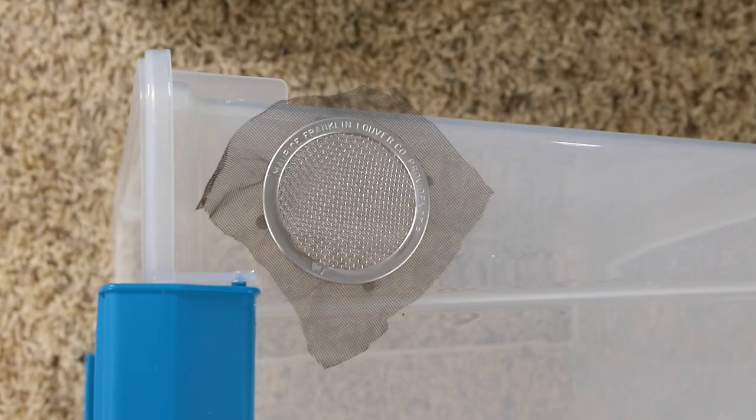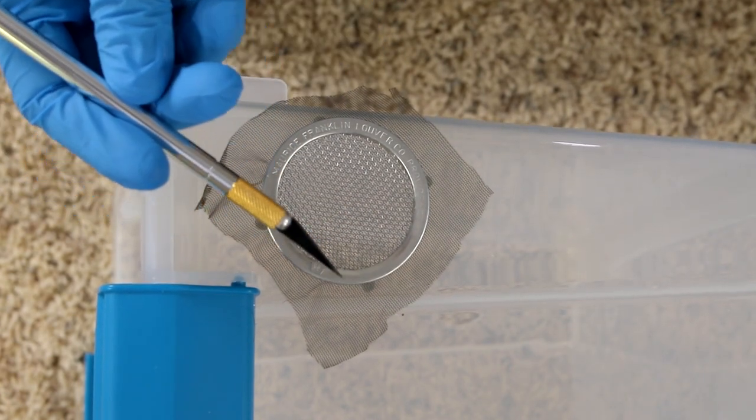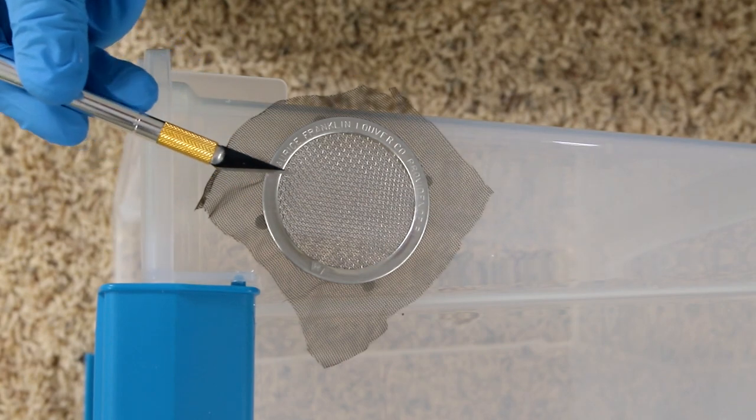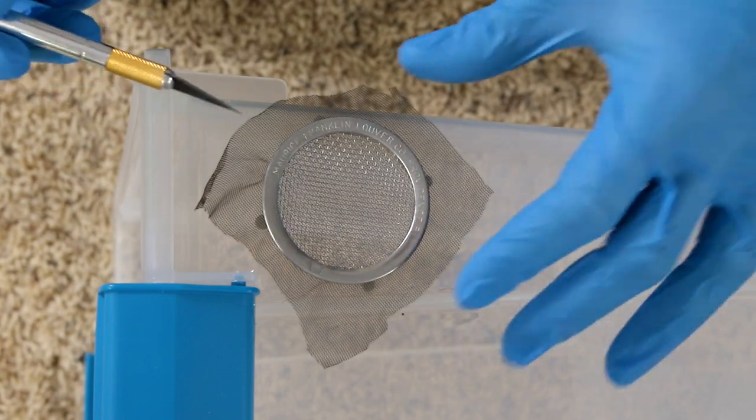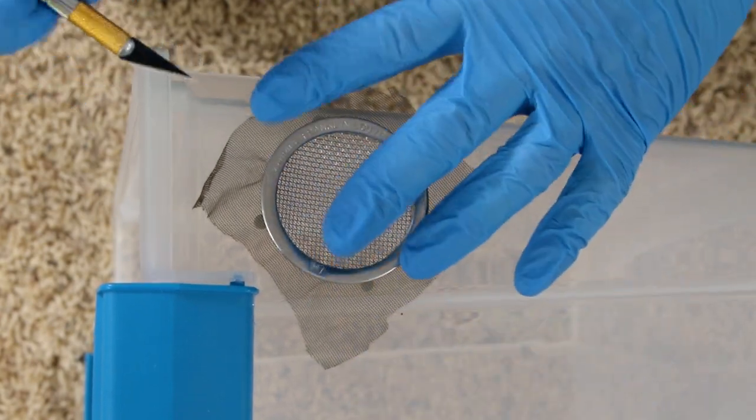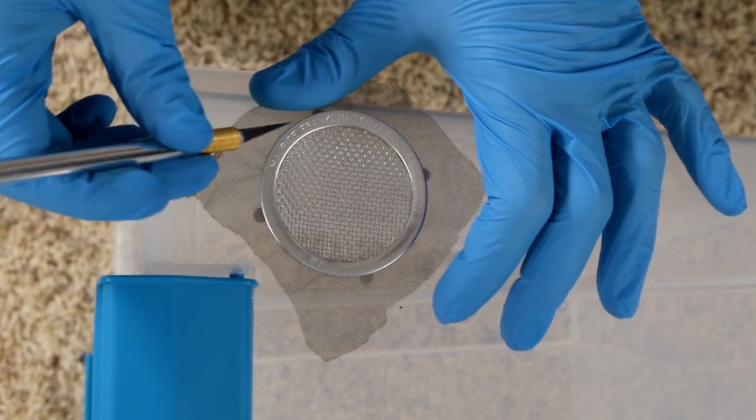Now we're going to trim the mesh so that it is the same size as the screen. All you need is an extremely sharp exacto blade. I would recommend using a new blade to make sure it's as sharp as possible. Then you're going to pull this mesh gently so that it's taut. Don't pull it too hard because it will rip.